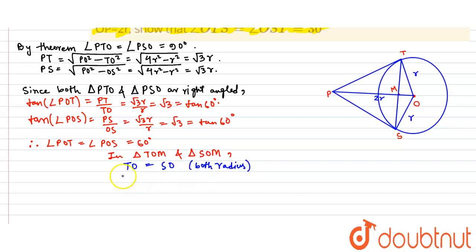And angle TOM equals angle SOM, which we have just shown to be both 60 degrees. Here both of them are 60 degrees and OM equals OM as it's common.